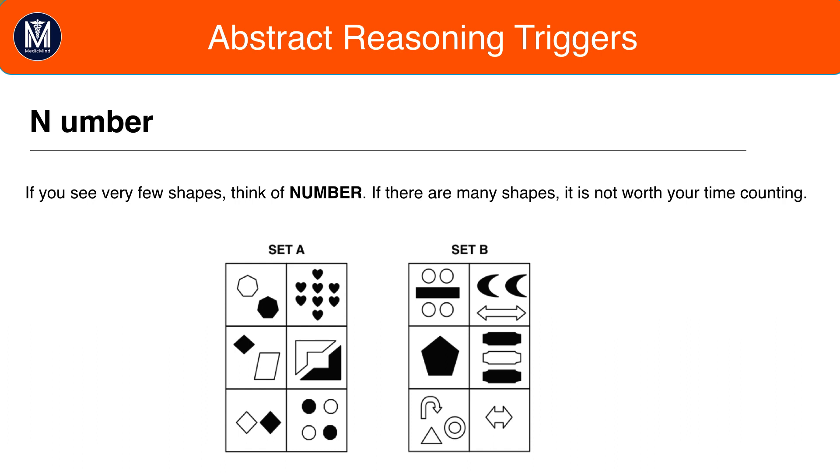Therefore you should only count if you see very few shapes. For example in this example from the previous tutorial where set A had an even number of shapes and set B an odd number of shapes. There aren't many shapes at all in this particular group of sets so therefore number is a likely pattern.